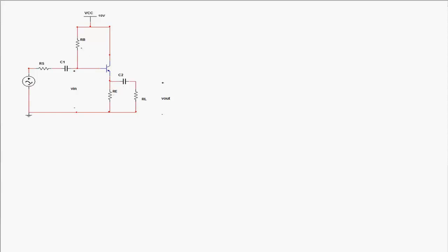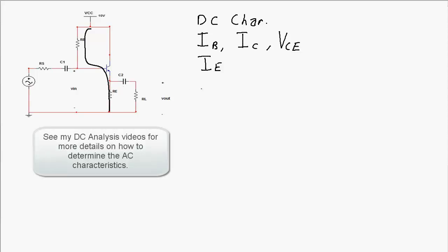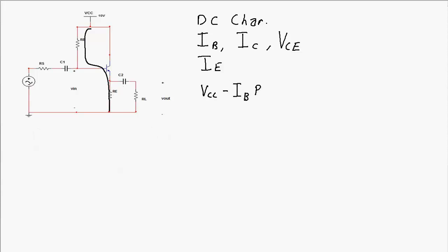Without exact resistor values we can't get exact numbers, but for the DC analysis we want to find the base current, collector current, collector-emitter voltage, and emitter current. For the input loop, we apply Kirchhoff's voltage law: starting at VCC, subtracting the voltage drop across the base resistor, subtracting the base-emitter junction voltage of about 0.7 V, and subtracting the voltage drop across the emitter resistor, bringing us down to the zero volt reference.